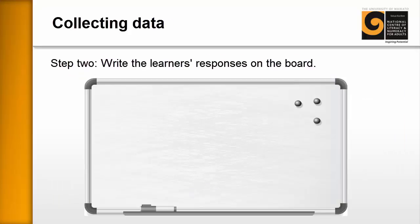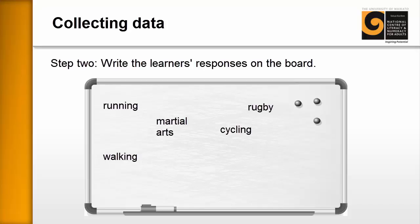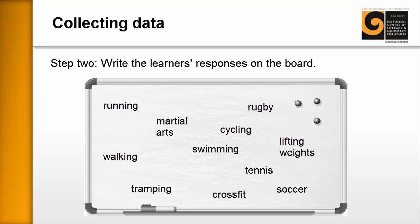Collecting the Data. Write the learners' responses on the board. The learners will be thinking about what physical activities other people do, and you should get a good variety of ideas — running, walking, martial arts, cycling, rugby, lifting weights, tennis, tramping, crossfit, soccer, swimming. The learners are predicting what the data might say, and we can come back to this at the end and compare.